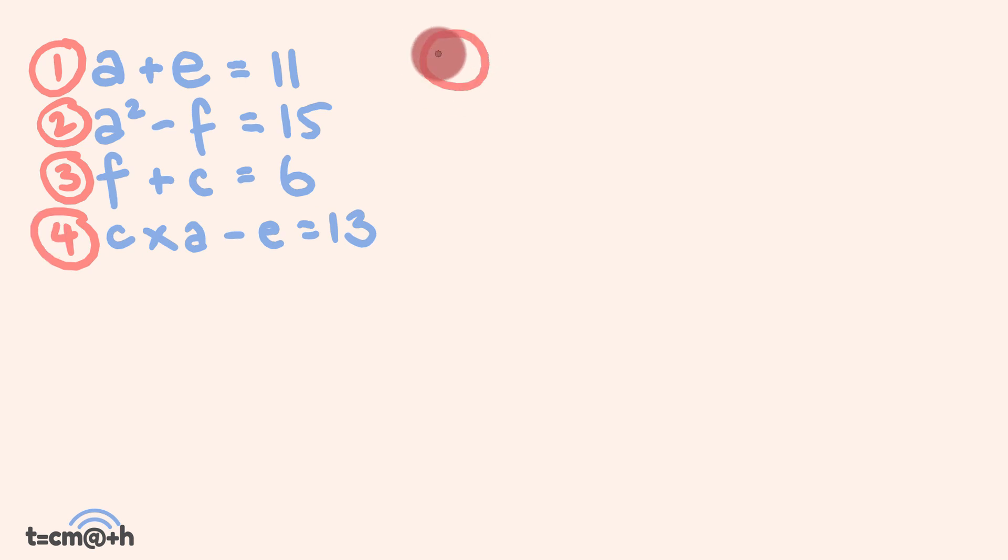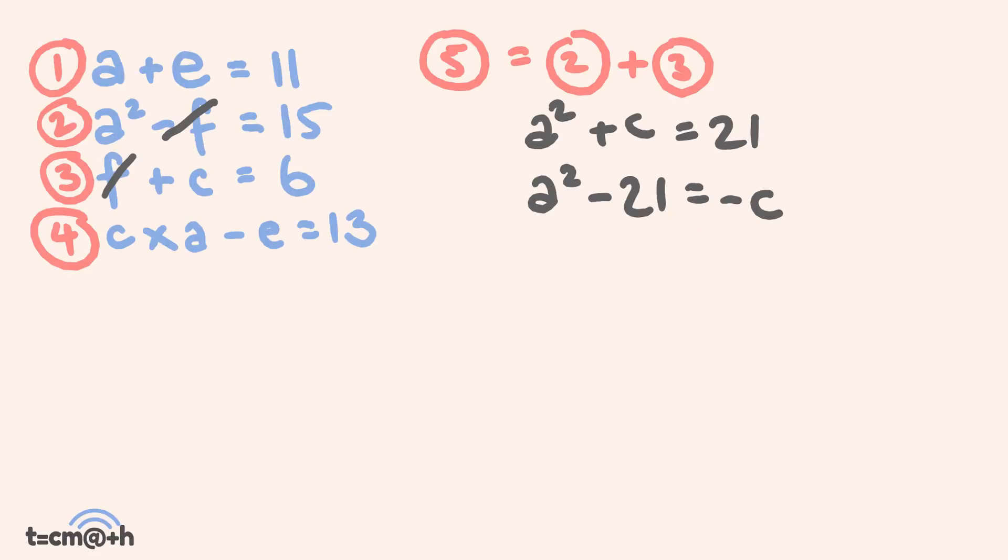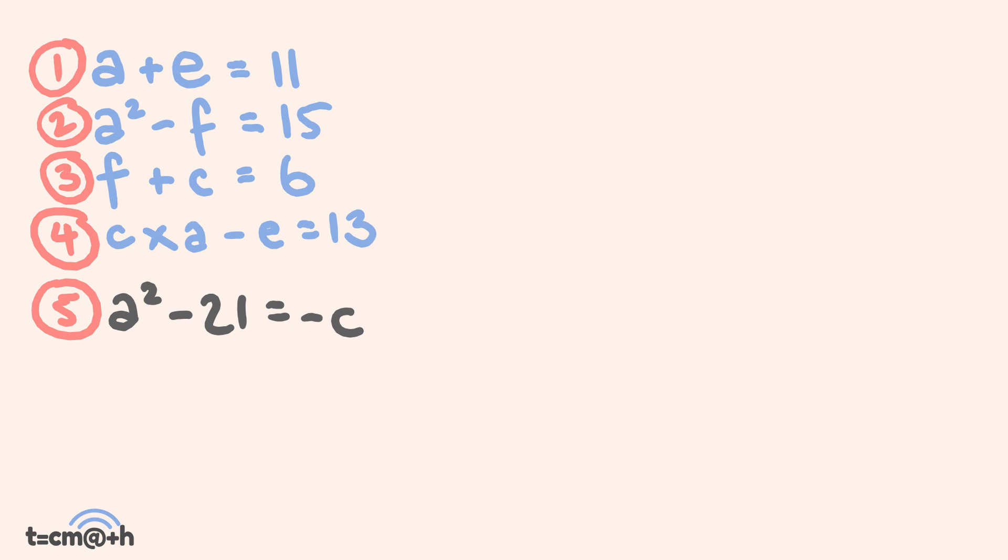We're going to form equation 5, and equation 5 is going to be formed by adding equation 2 and equation 3 together. Equation 2, a² - f = 15, and equation 3, f + c = 6. When we add these two together, you're going to see that we have a negative f here and a positive f here, so these cancel out. We end up with a² + c = 21. This can be rearranged so we get a² - 21 = -c. I'm going to move equation 5 down underneath these equations just to give us a bit of space.